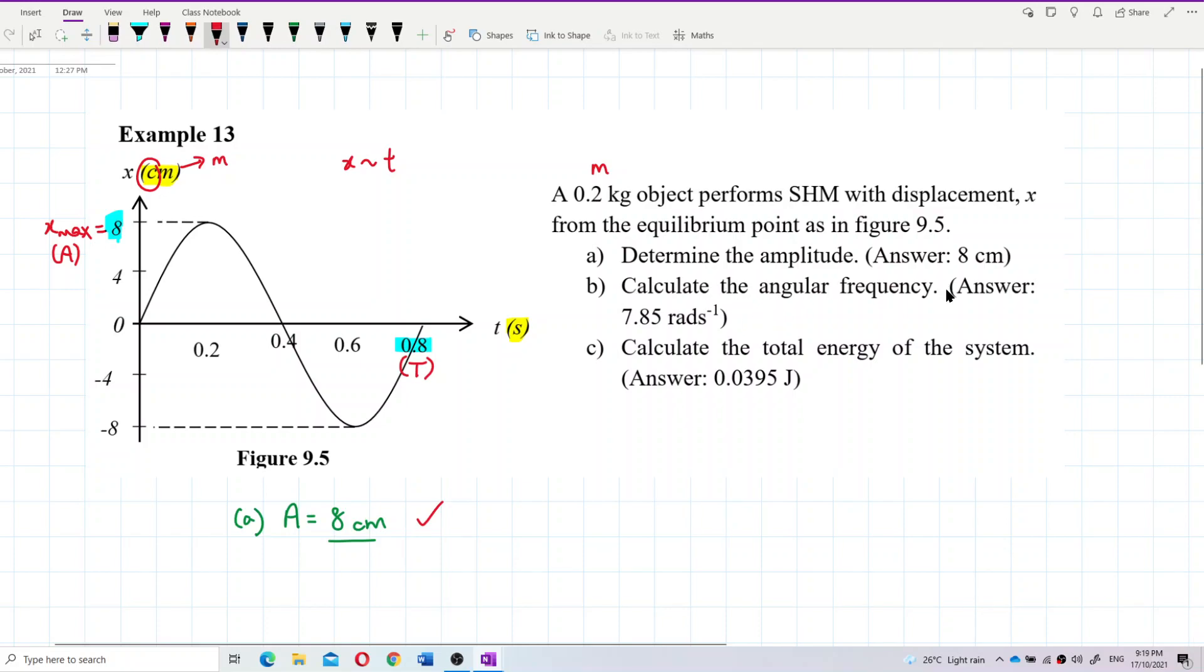Now, what is the angular frequency? First question is amplitude. Second question is angular frequency. Angular frequency is omega. Omega in previous chapter, omega is angular velocity. But in this chapter, omega is also called angular frequency. Now B. So omega, angular frequency, we don't have, we have period. So this period can help us to find omega because we know that omega is 2 pi over period.